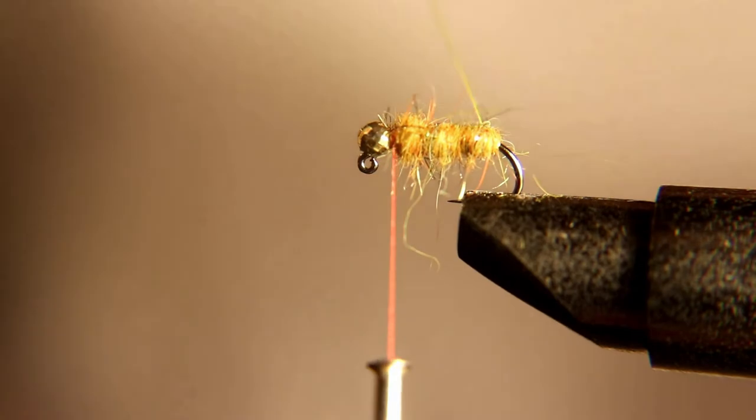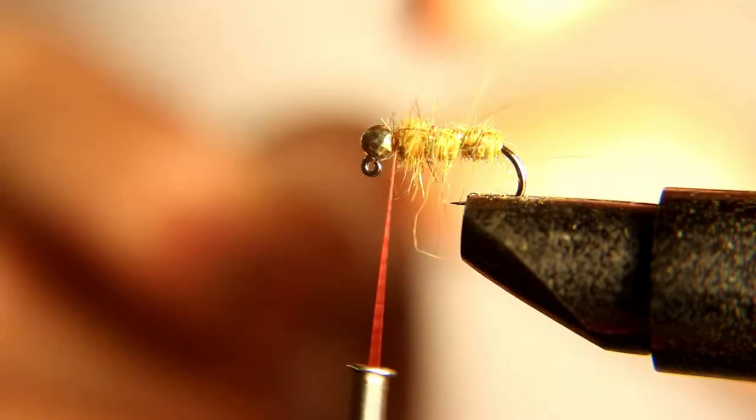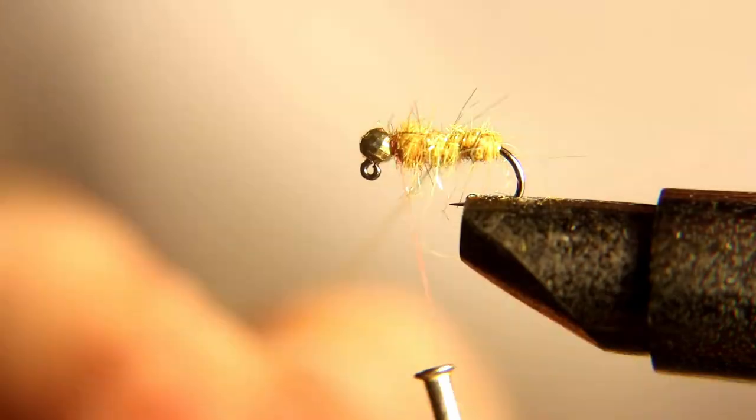Now you're going to rib the fly with your wire. Start wrapping that up, and when you get right behind the bead tie it off and helicopter your wire off.